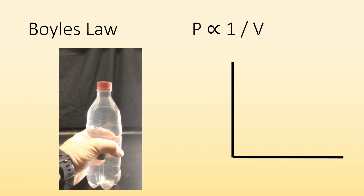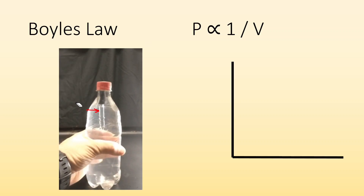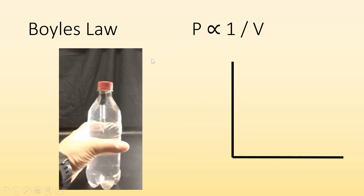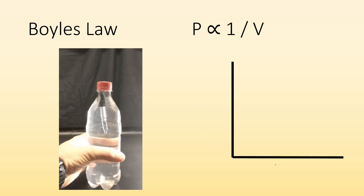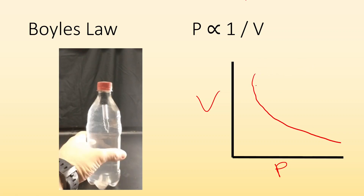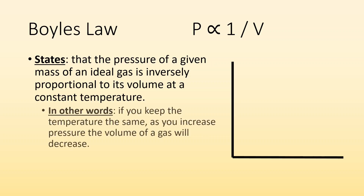Boyle's Law — here I have a gif of a Cartesian diver. There's an eyedropper partially filled with water and partially filled with gas. As my hand squeezes the bottle and pressure goes up, the volume of the gas inside goes down. This is Boyle's Law: pressure versus volume. As pressure goes up, volume goes down, represented by a curve on a graph.